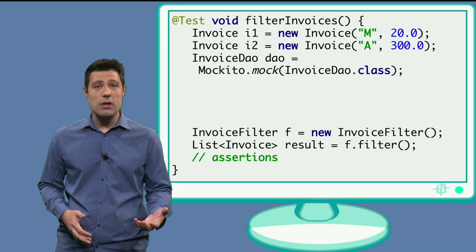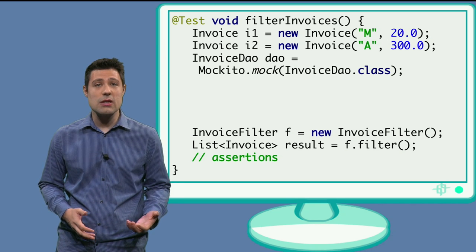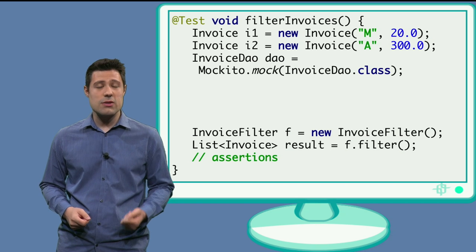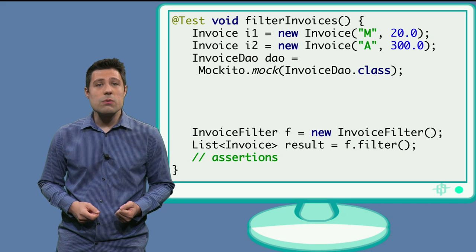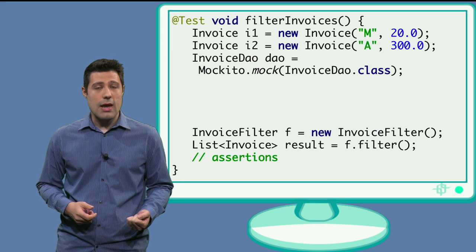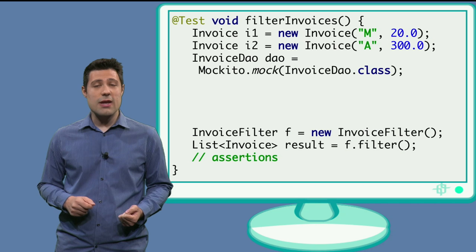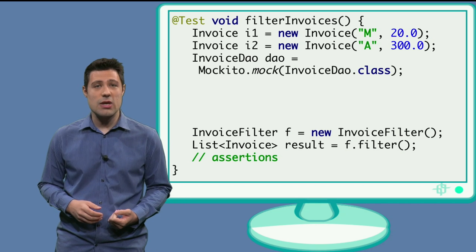And the first thing we do is to tell Mockito which class it needs to mock. And in this case, it's the invoice database, the one we want to mock. So the mock method from Mockito receives the class we want to mock. And you see the dot class, because we are getting the definition of that class from the JVM.